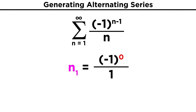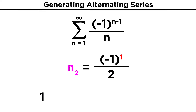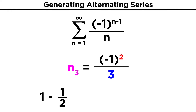For the first term, we are raising negative one to the zero power, which is one, and then we divide by one, so we just get one. But then, for the second term, negative one is raised to the first power, so we leave the negative one, divide by two, and we get minus one half. For the third term, the negative one is squared to give positive one, and we get one third.